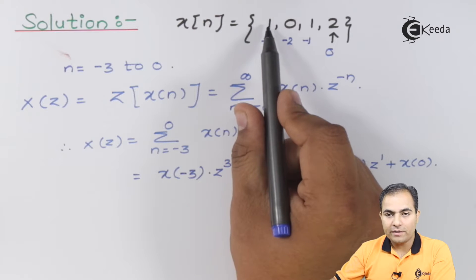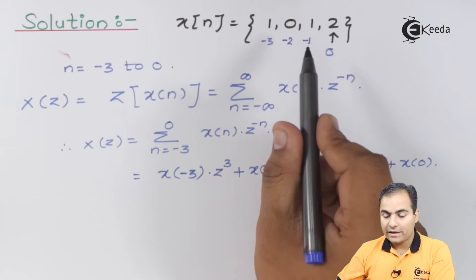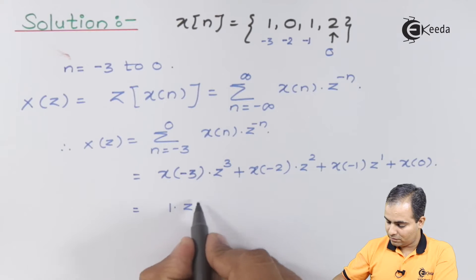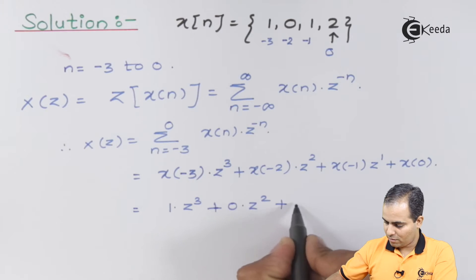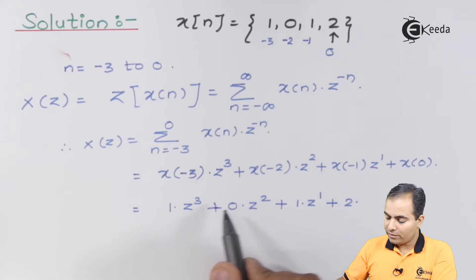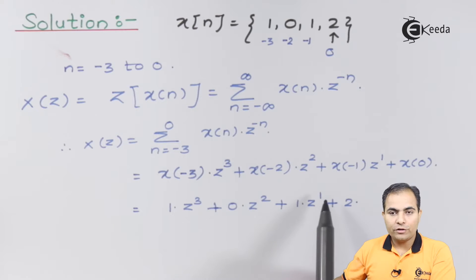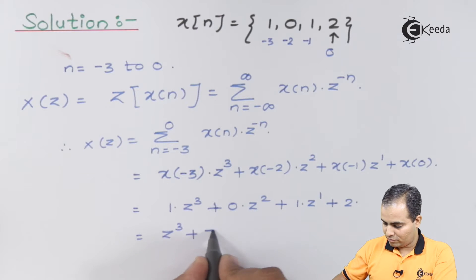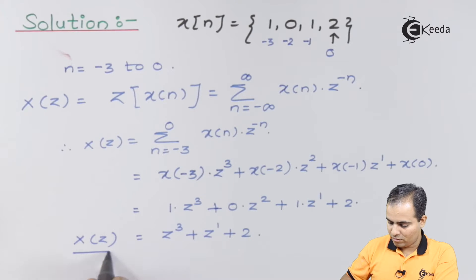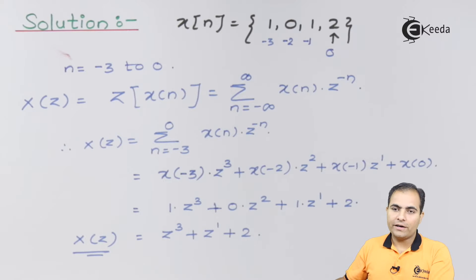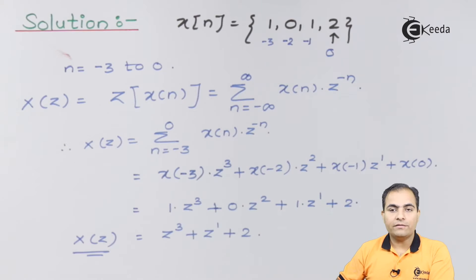x[−3] has amplitude 1, x[−2] has amplitude 0, x[−1] has amplitude 1, and x[0] has amplitude 2. Since 0 times anything is 0, that term drops out. The result is: X(z) = z³ + z¹ + 2. This is the Z-transform of x[n]. Next, we will find the ROC and determine the actual region of convergence of this function.